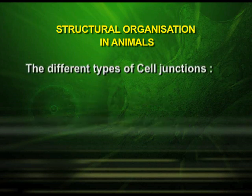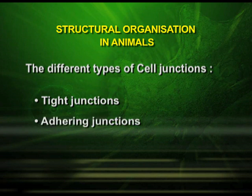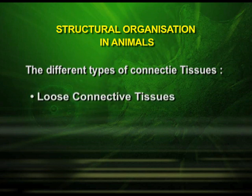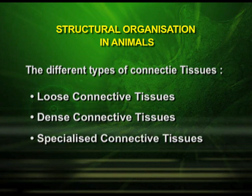The different types of cell junctions are the tight junctions, the adhering junctions, and the gap junctions. The different types of connective tissues are the loose connective tissues, the dense connective tissues, and the specialized connective tissues.